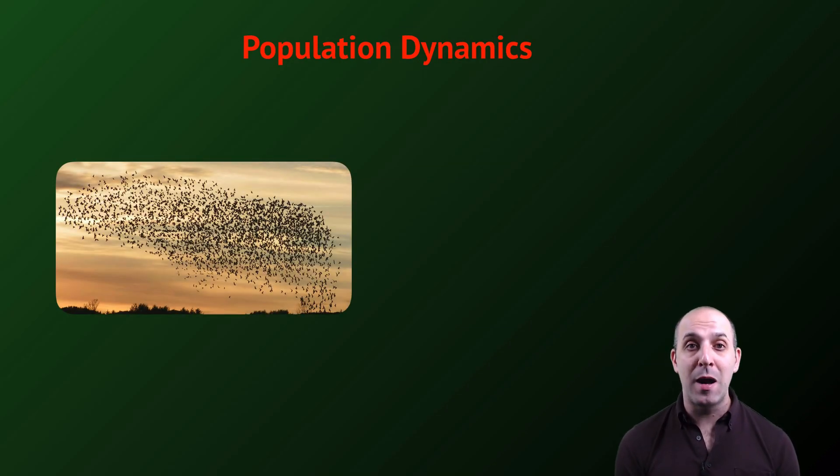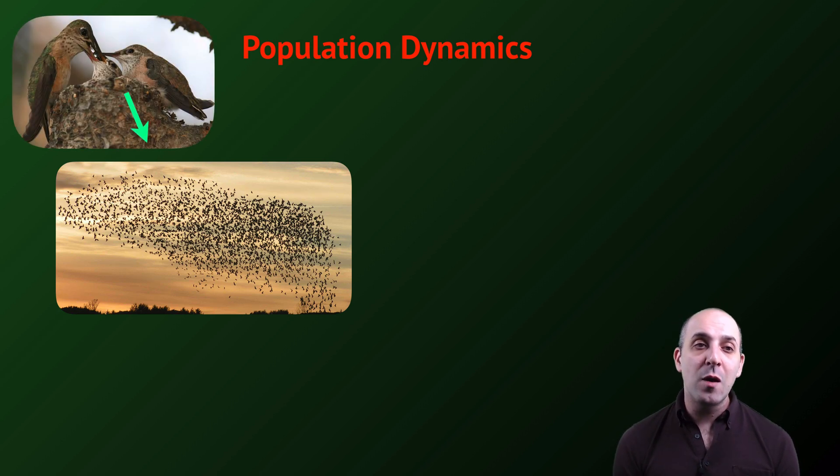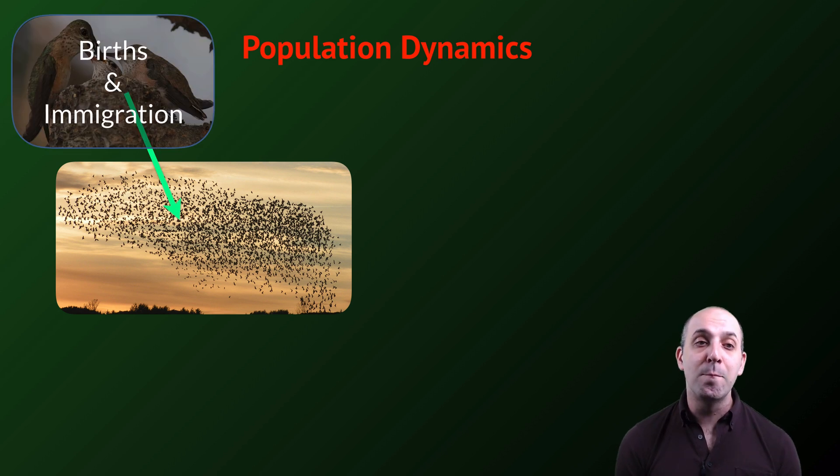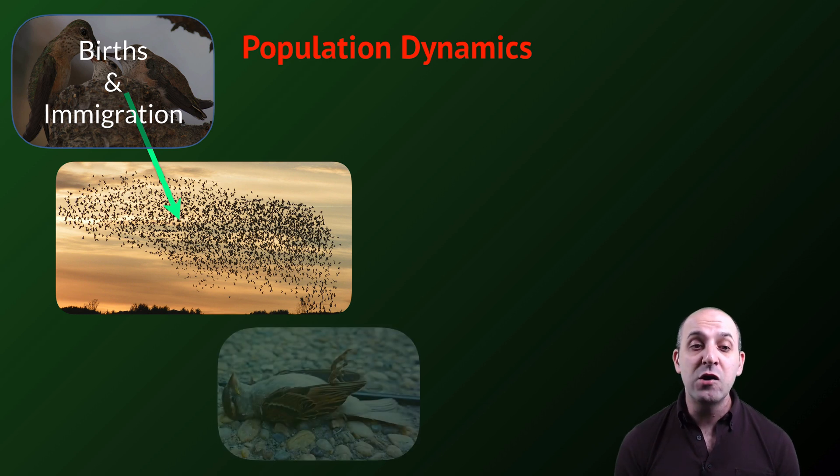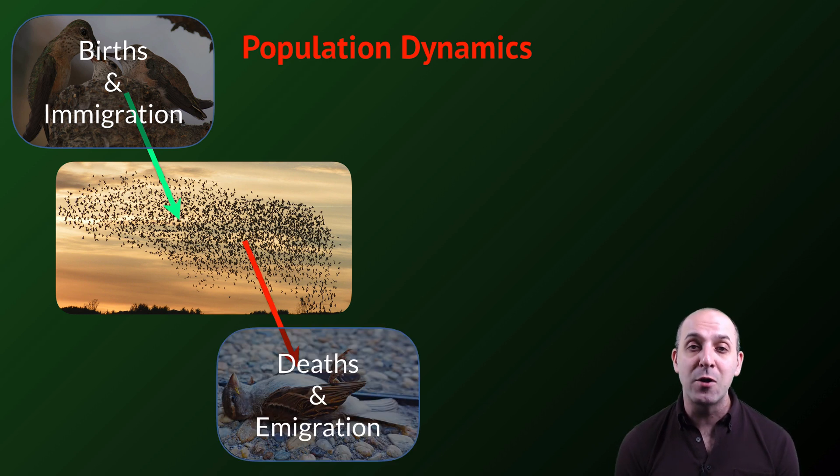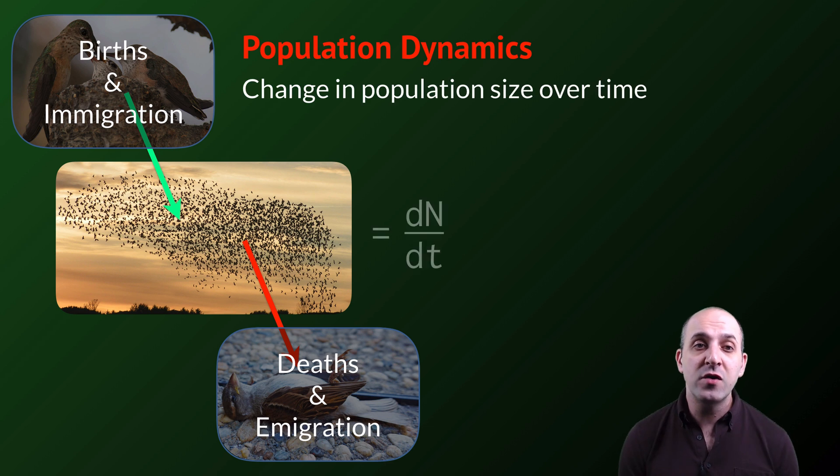In order to get a handle on population dynamics, let's go back to our bird population and let's consider that as a particular unit. That bird population is going to have dynamics that are leading to an increase in the number of individuals in the population and a decrease. Increases in the number of individuals in the population come from birth and possibly from the immigration of individuals from other populations. Decreases are going to come from deaths and from emigration of individuals from that population.